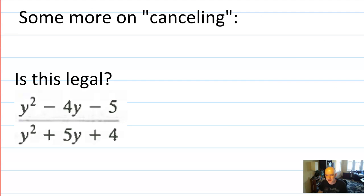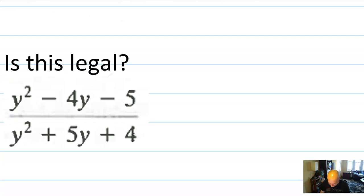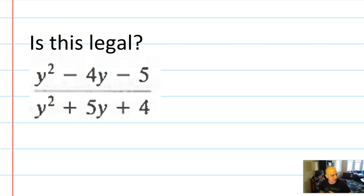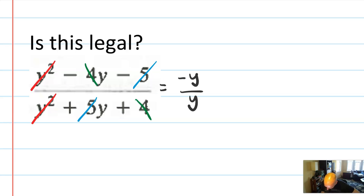While planning this video I was thinking about canceling, because it's something we do without often thinking about it. So let me give you an example of something that's bad. Say I had the same expression we just solved. You might say 'y-squareds cancel with y-squareds, 4s cancel with 4s, 5s cancel with 5s, so this equals negative y over y, which equals negative 1.' Is that legal? No — in no way is this legal.